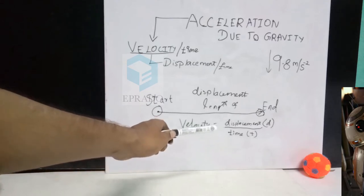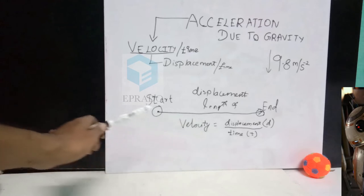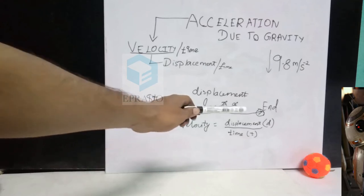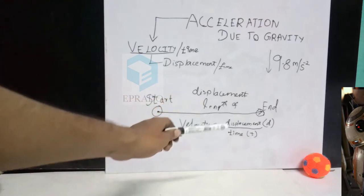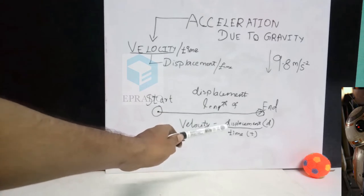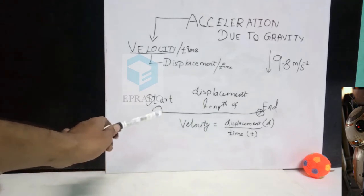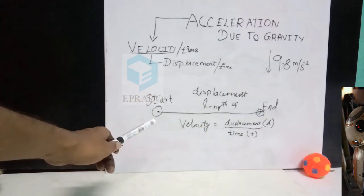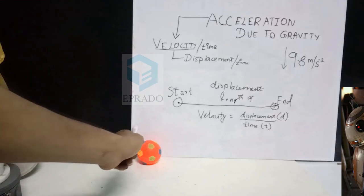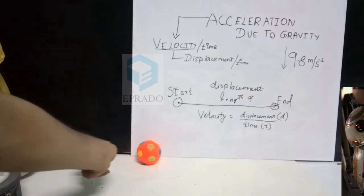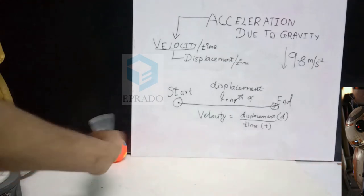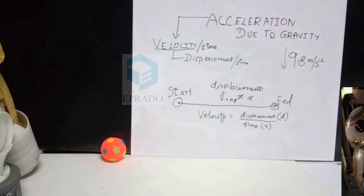That is, displacement is the length of the line from the starting point of the ball to the end point of the ball. And time taken T is the time taken by the ball to reach the end point from the start point. Now if I tap this ball with more force, the ball travels faster and the same displacement happens in a faster time.